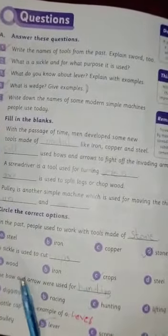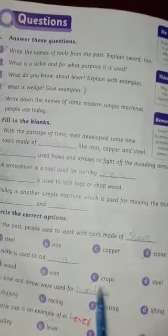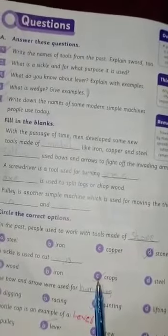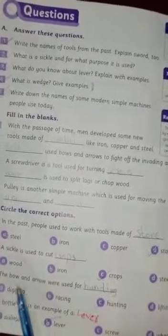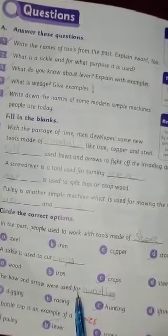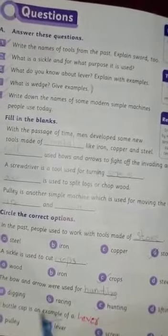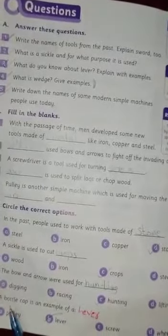Iron cutie? Crop cutie, kichi. Number three: the bow and arrow were used for - digging, racing, hunting, lifting. Hunting. Number four: a bottle cap is an example of - pulley, lever, screw, wheel and axle. Lever.